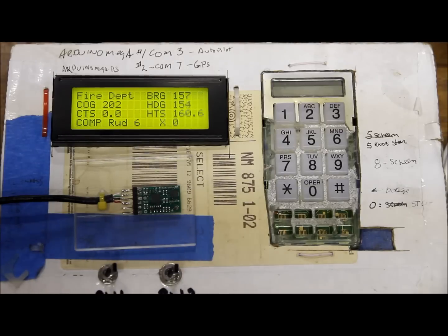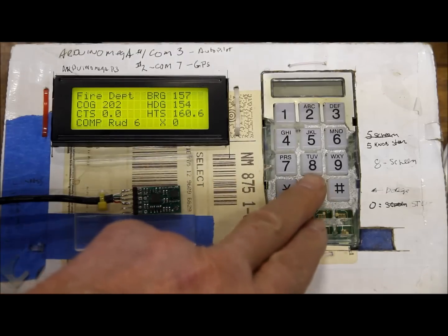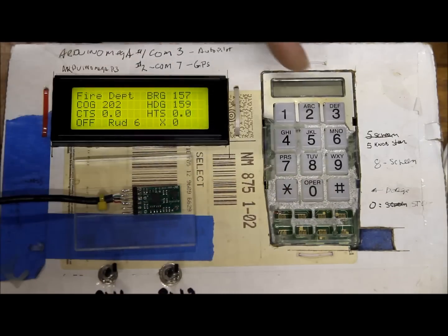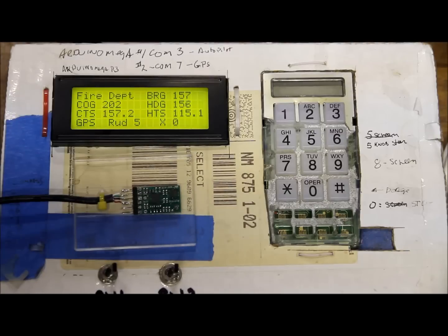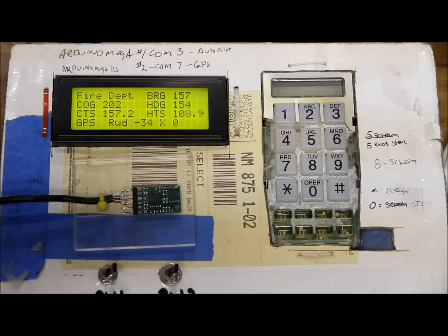So now we'll show the GPS mode. First we'll go back to off, then we'll hit 2 for GPS. Now the rudder's, it's not actually under control so the rudders just made a big correction here to try to get us back on course.